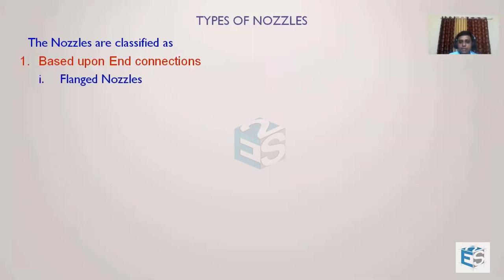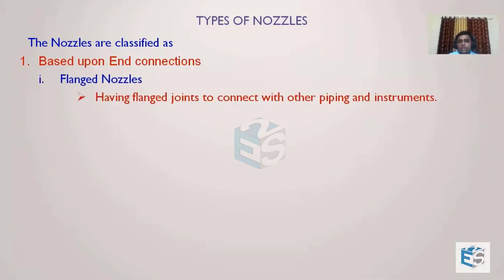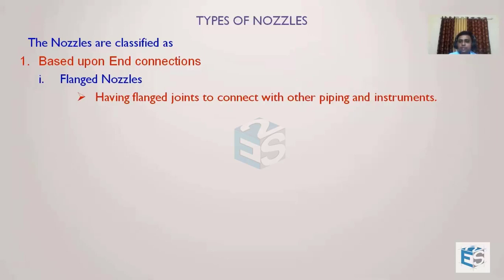The first type based on end connection is the flange connection. Flange nozzles are the most common, having flange joints to connect with other piping or instruments. Most piping has flanges, and we make flanges on the nozzles. With the help of studs, nuts, and a gasket in between, we can easily attach the piping to the nozzle. By loosening the nuts we can separate components for maintenance.